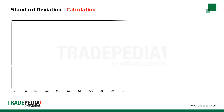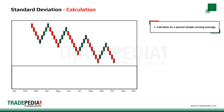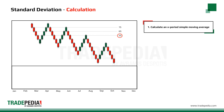To calculate the standard deviation, first calculate an x-period simple moving average. The default period used is 21. However, in our example, we will use a 3-period moving average. Averaging 3 closing prices of 75, 65, and 55 gives us an average of 65.